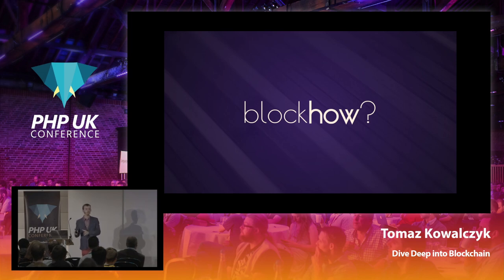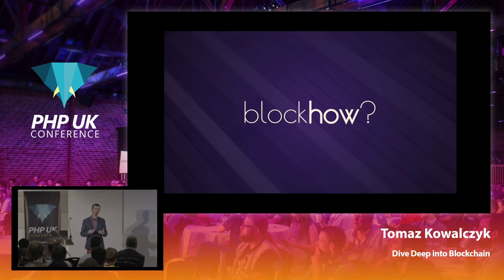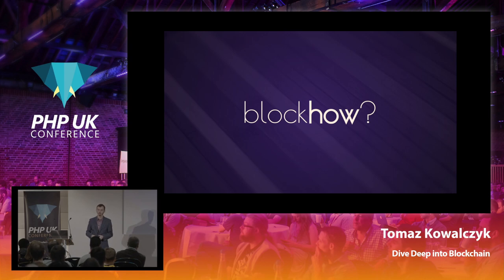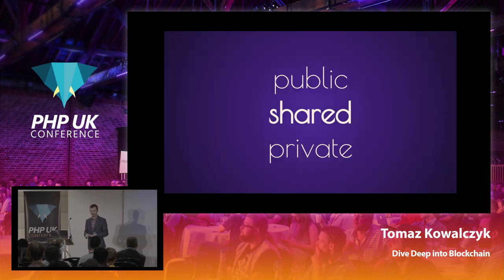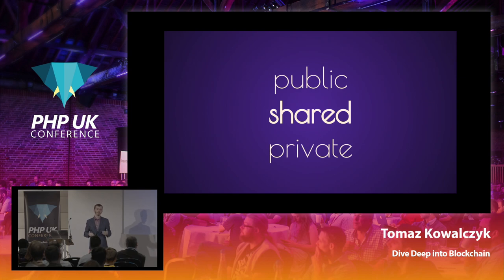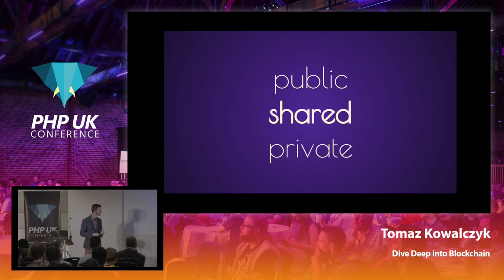Now that we've leveled our knowledge and talked about properties and use cases, let's talk about how you actually do this. What technical considerations do you need to have in mind when implementing a blockchain-based solution? The first thing I consider important is what kind of network you want to have. Public blockchain is the most popular one, because all cryptocurrencies are effectively public blockchains.